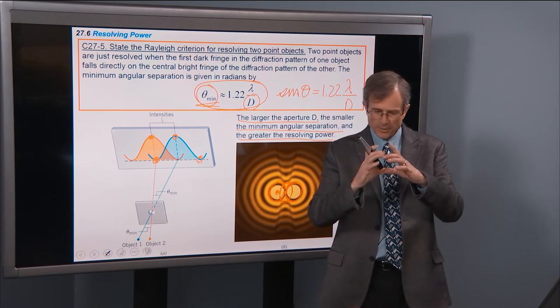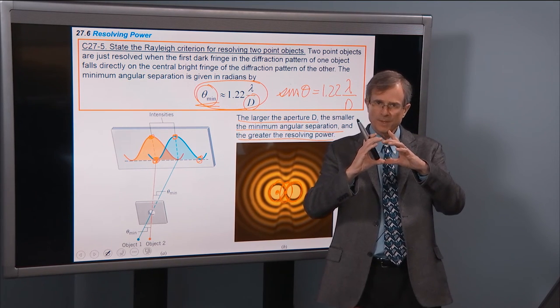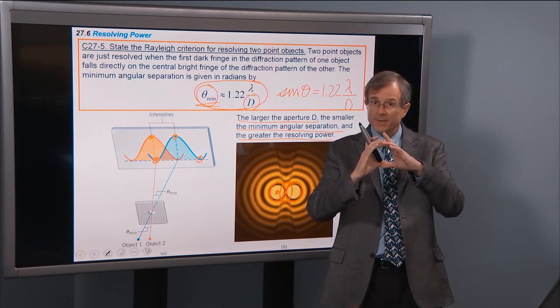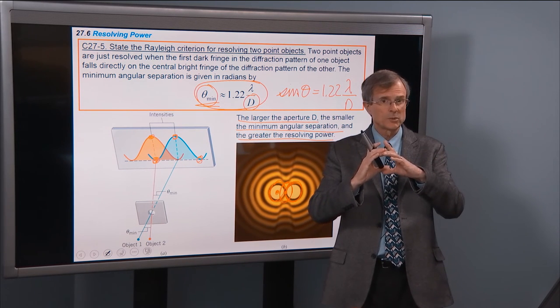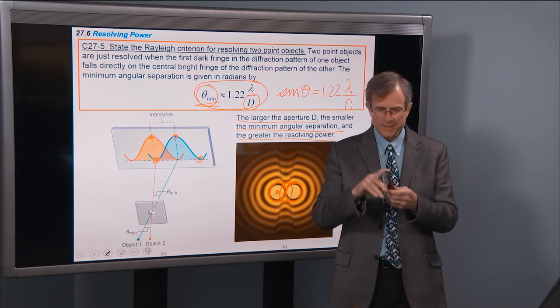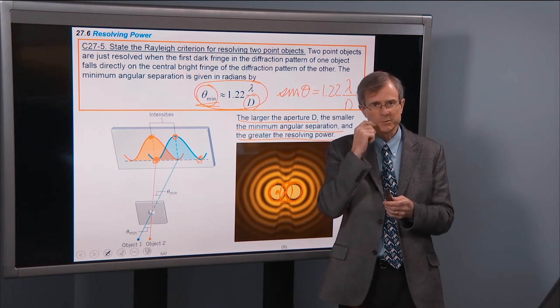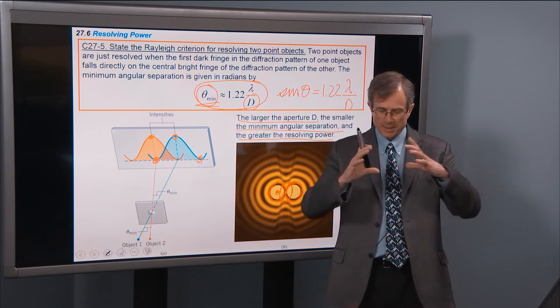But if you increase d, then you'll decrease this theta min. So the larger the aperture of your camera, if it's a 35 millimeter or whatever, that's a good aperture for resolution purposes. If you have a tiny little camera aperture, it's not going to resolve things as well.